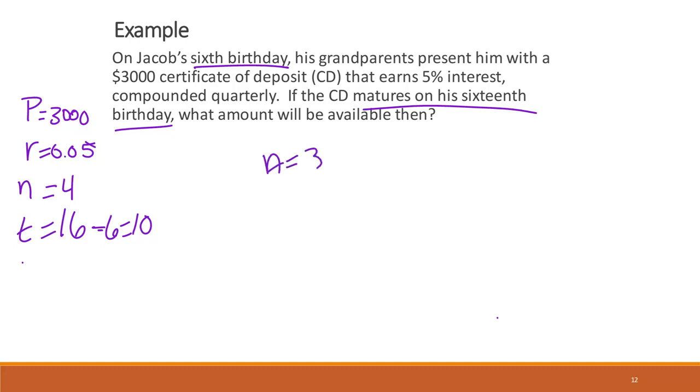So we get A equals 3,000 times 1 plus 0.05 over 4 to the 4 times 10 in the exponent. So we can go ahead and replace that.